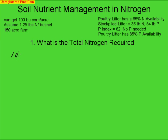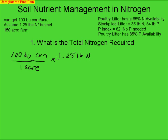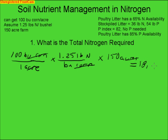We assume that we're going to get 100 bushels of corn for every acre — pretty optimistic in some regions. We are using an application rate of 1.25 pounds of nitrogen for every bushel of corn, which is the upper range, giving us pounds of N per acre. We have a total of 150 acres that we are planting, which leaves us with a total of 18,750 pounds of nitrogen.